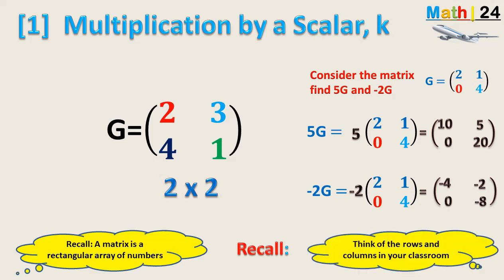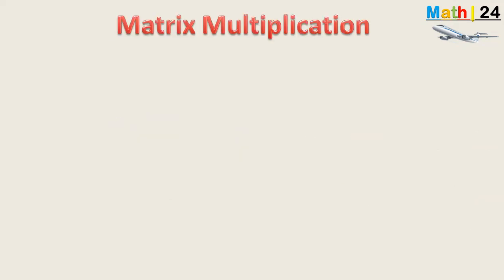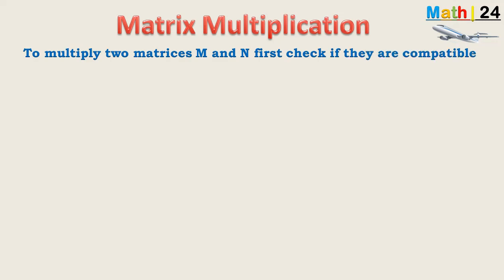Recall that a matrix is a rectangular array of numbers. Now let's move on to the second part: multiplying a matrix by another matrix. To multiply two matrices M and N, we must first check if they are compatible. The first thing to do is to check for compatibility — if they are not compatible, then multiplication cannot work. I'm going to show you how compatibility is tested.